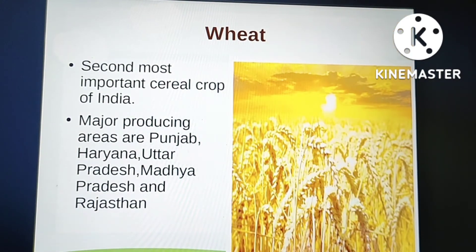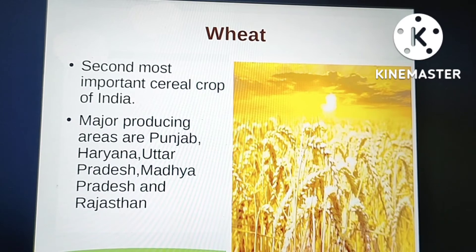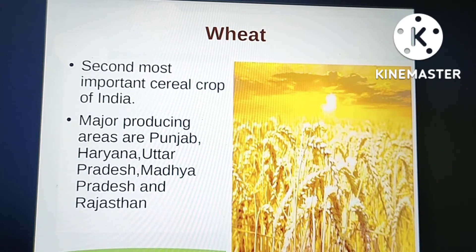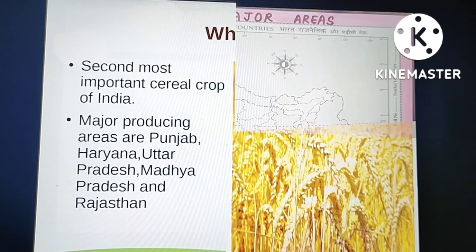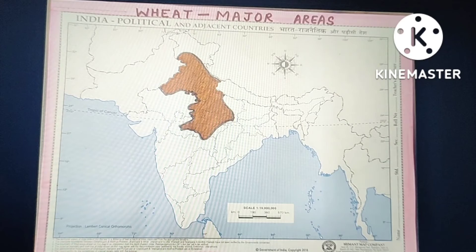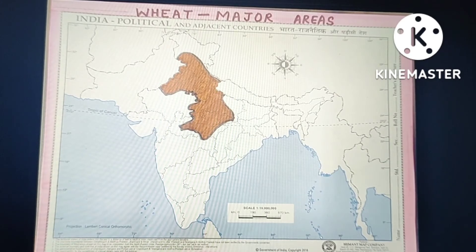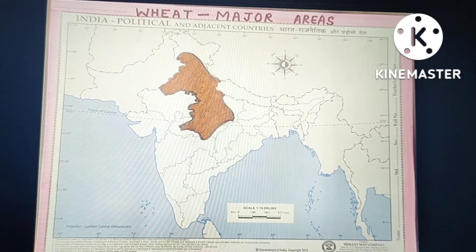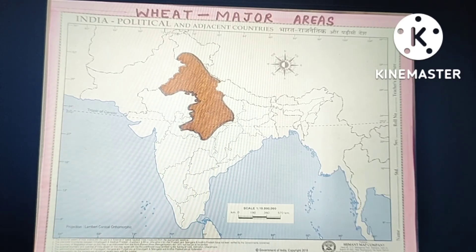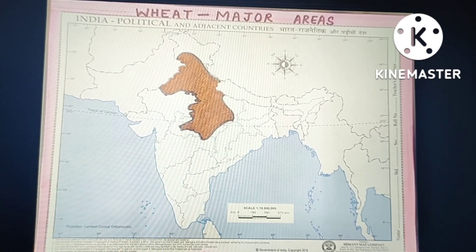Next is wheat. Wheat is the second most important cereal crop of India. The major producing areas are Punjab, Haryana, Uttar Pradesh, Madhya Pradesh, and Rajasthan. On the map, starting from the north: southern Jammu and Kashmir, Himachal Pradesh, Uttarakhand, Punjab, Haryana, northern Rajasthan, western Uttar Pradesh, and central Madhya Pradesh.